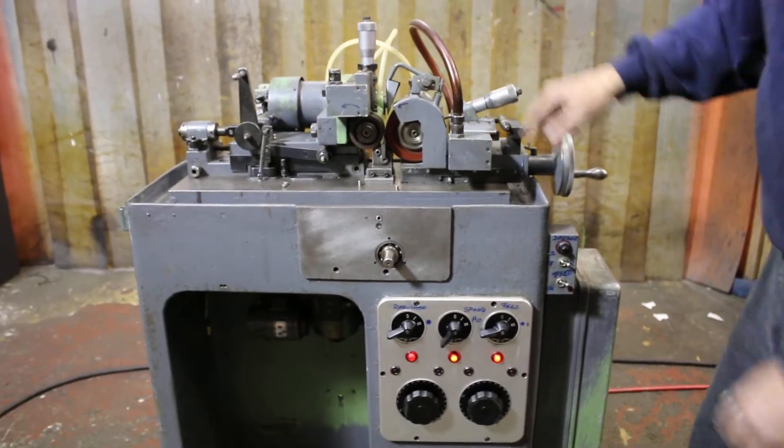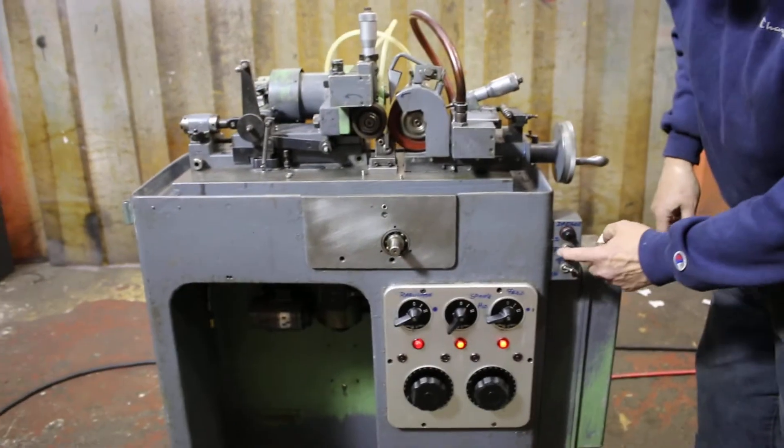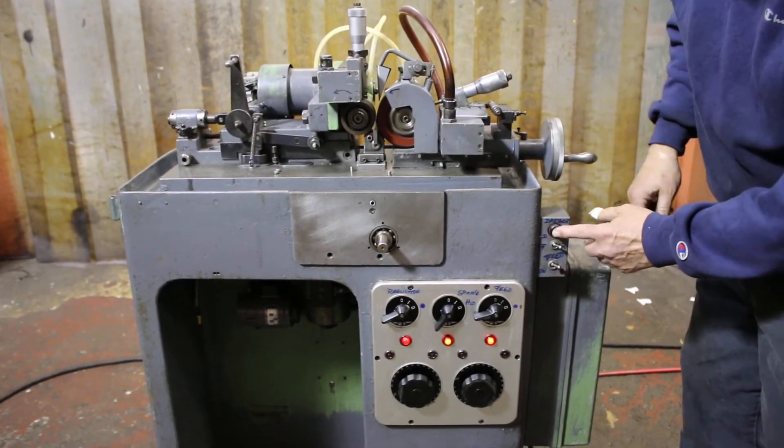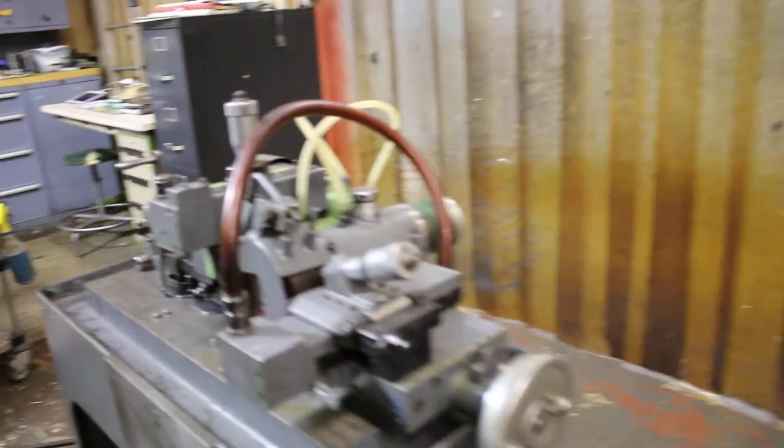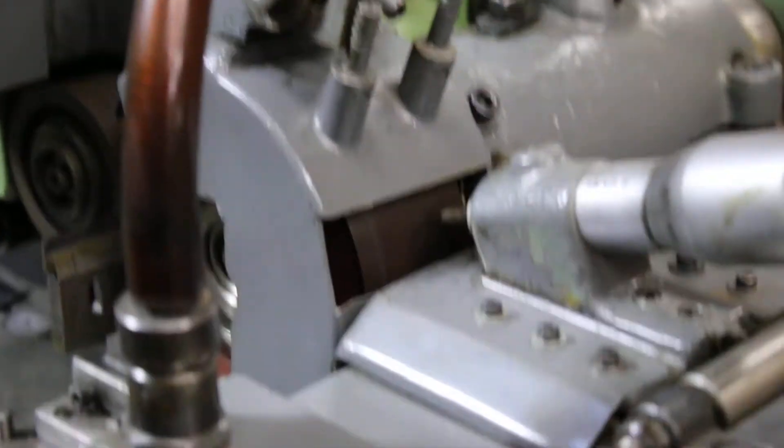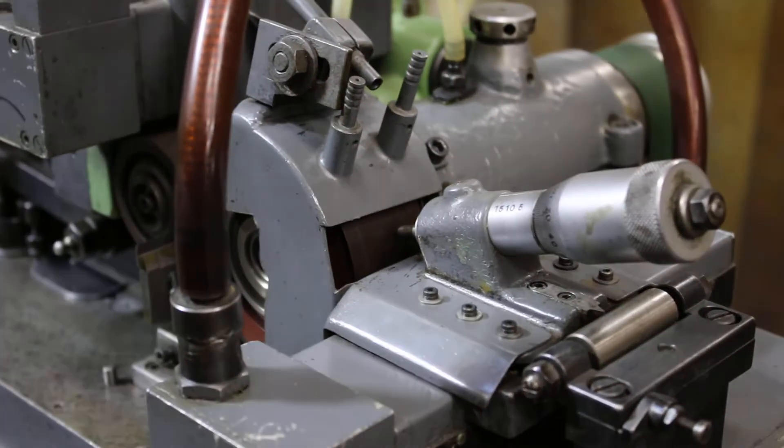So if I want to move this diamond, I can go forward or reverse with the center switch. And then you have to hold this. And if you come here, you'll see the diamond going across the wheel. In this case, this is a diamond wheel and we wouldn't really want to dress it.